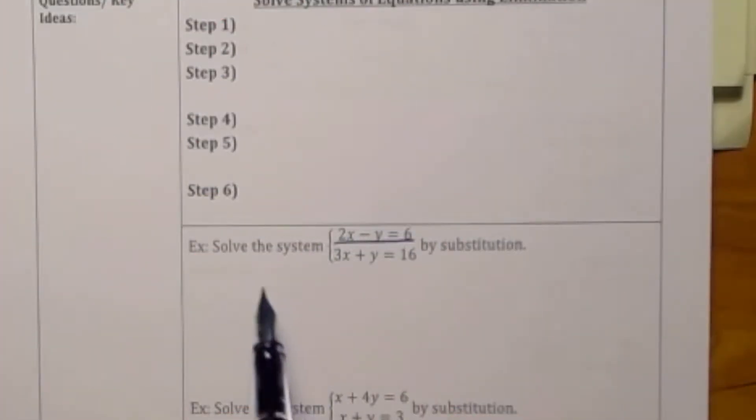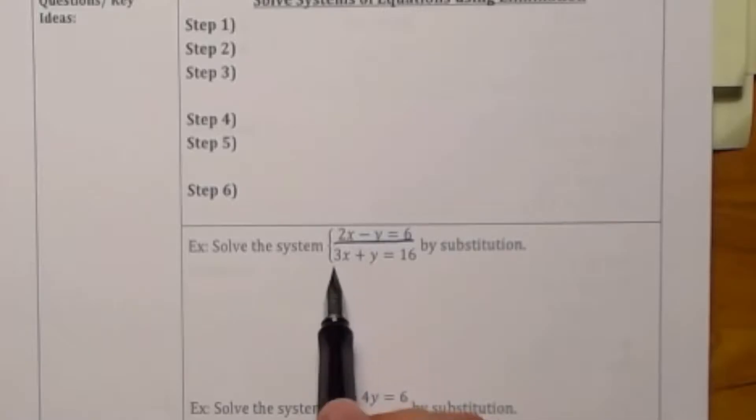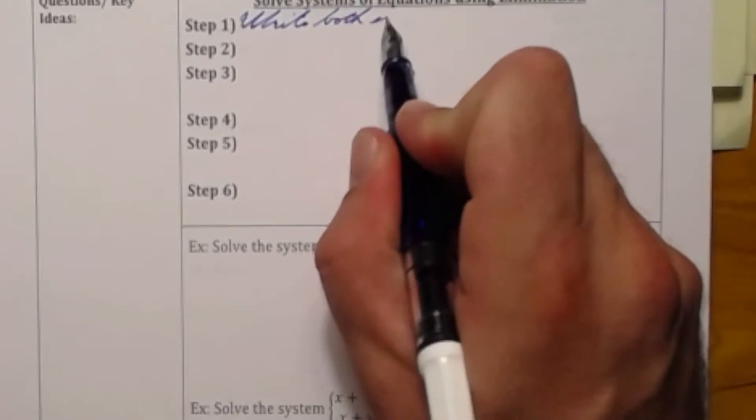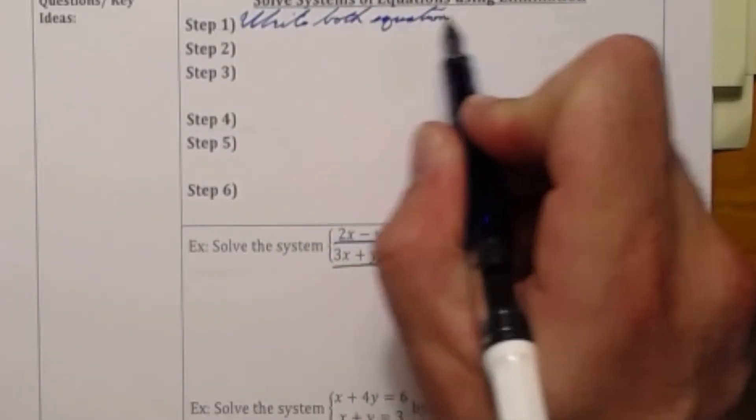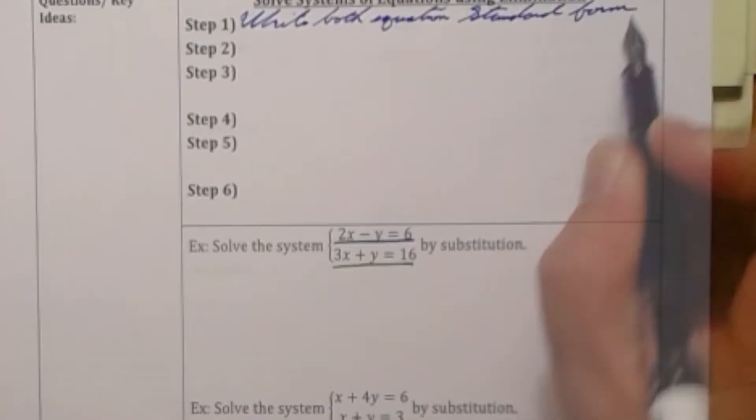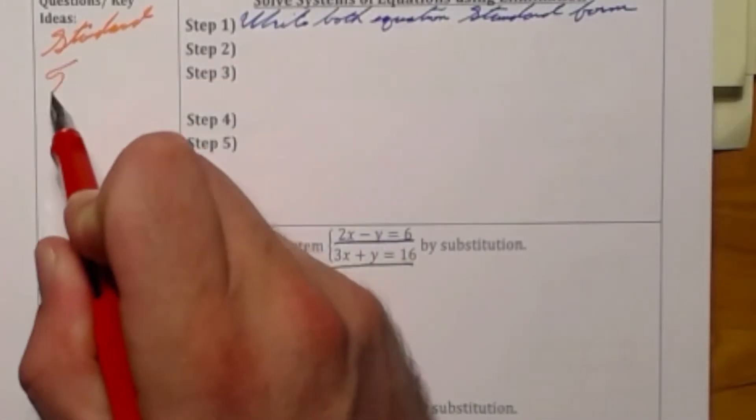Let's look at an example. I see that both equations, one underlined in blue and one underlined in green, are written in standard form. This saves me the work of step one which is to write both equations into standard form. Standard form being ax plus by is equal to c.